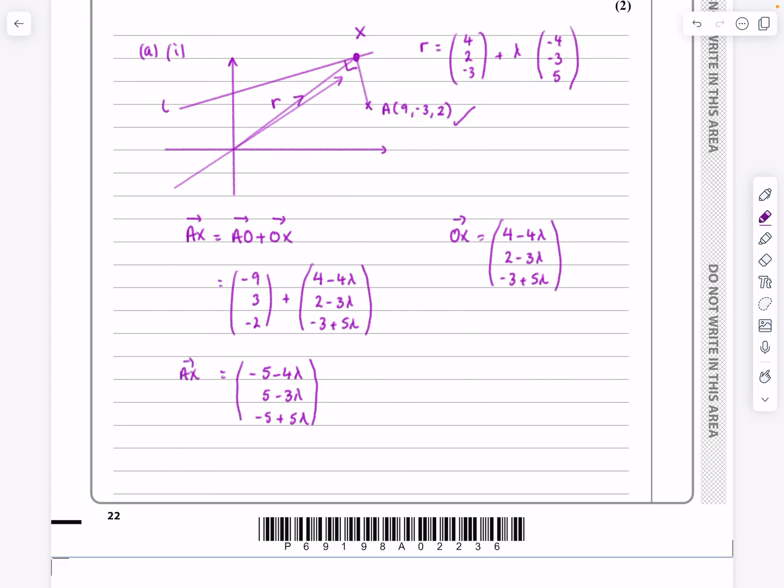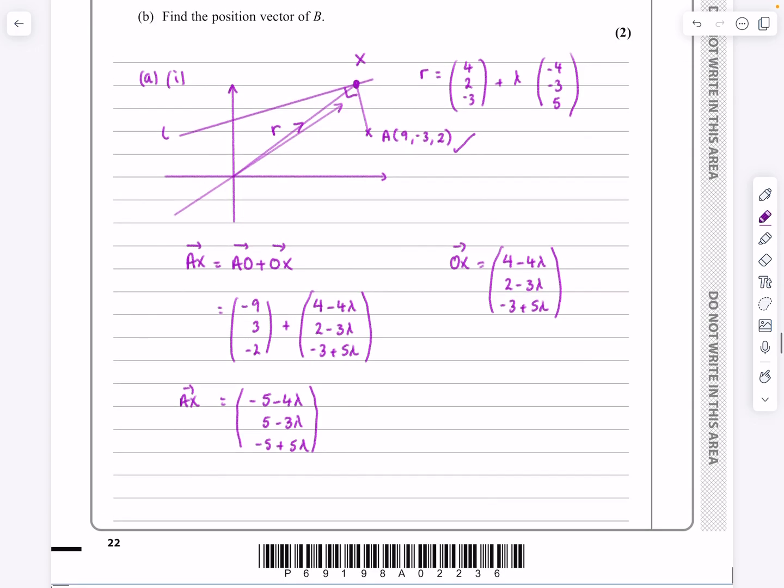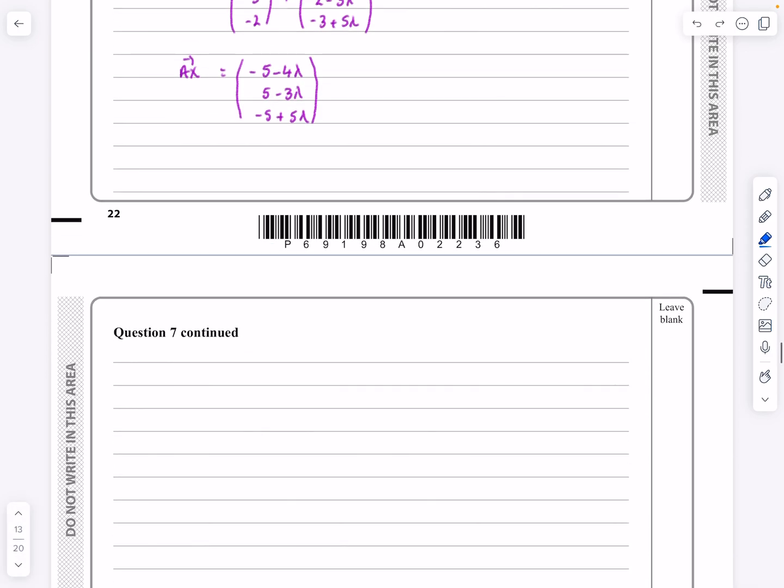So what was the point of doing AX? The point of doing AX was I can now say this vector dotted with this vector is going to equal to 0. So if that's true, I can now say, let's not bother it with the capital letters, let's just get on and do it. So minus 5 minus 4 lambda, 5 minus 3 lambda, minus 5 plus 5 lambda, that dotted with the direction of the line, which is minus 4, minus 3, 5, that is going to equal to 0. So if AX is perpendicular, then A dot B equals 0. I was just explaining it to the examiner if they weren't sure.